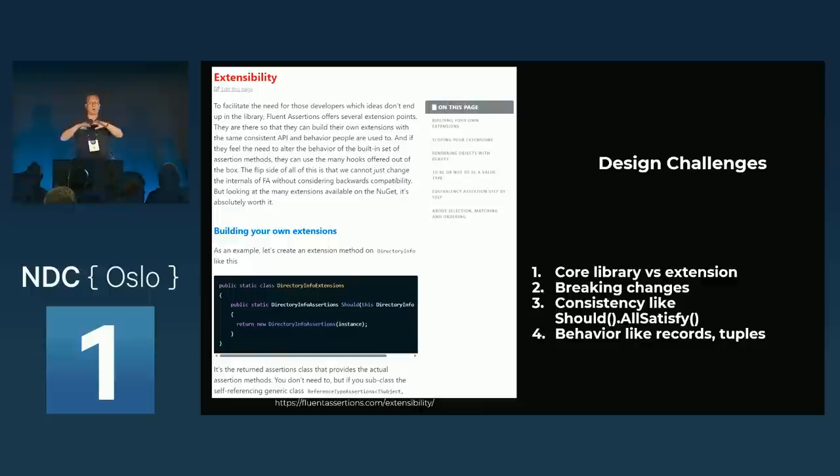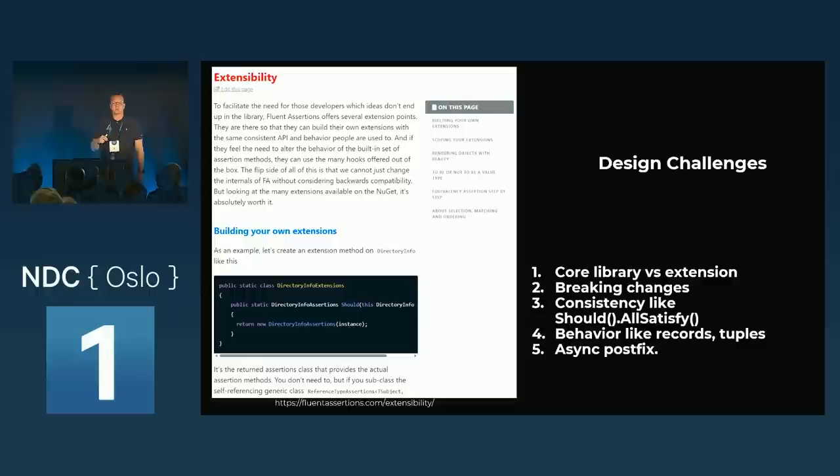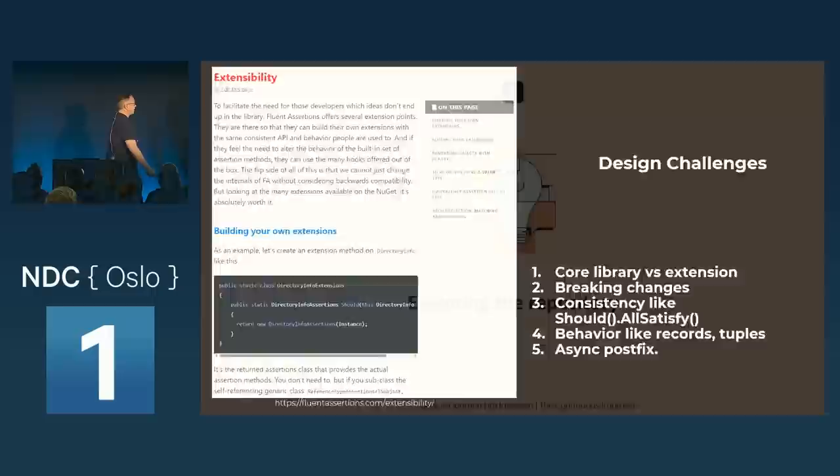Records and tuples — how do you deal with comparing two tuples? Do you use the implicit equals implementation or compare properties and fields? Async method naming — do you postfix all your methods with 'async'? We have the same debates. These are difficult decisions in our little bubble.